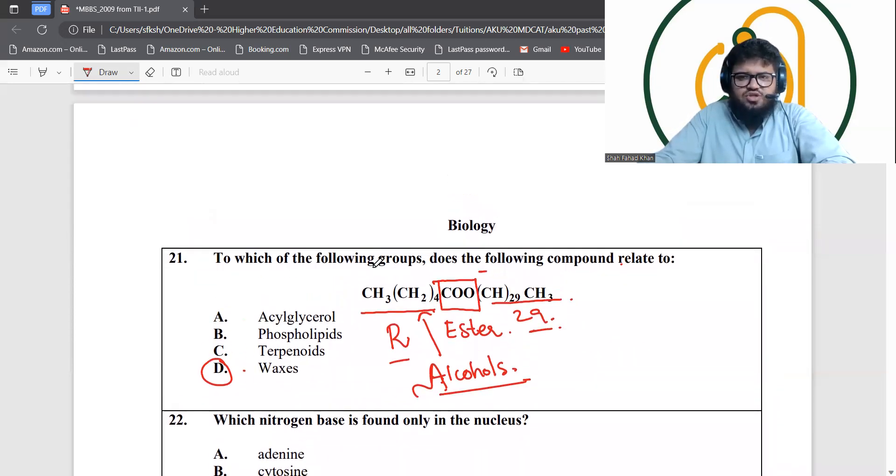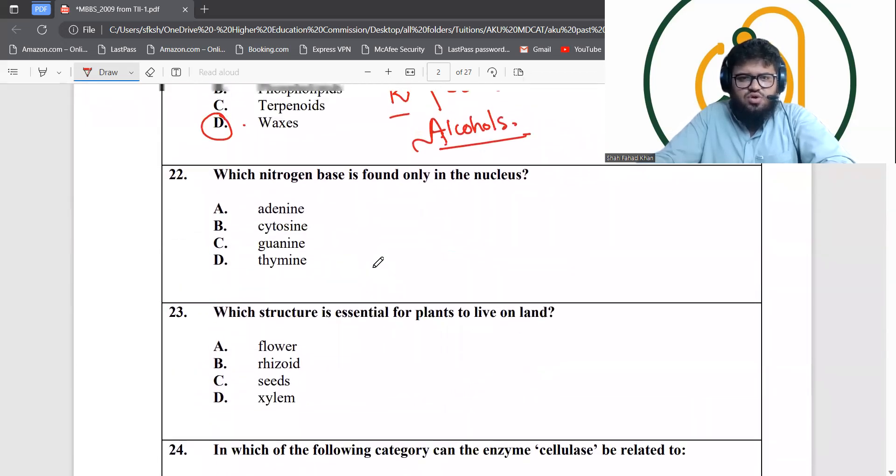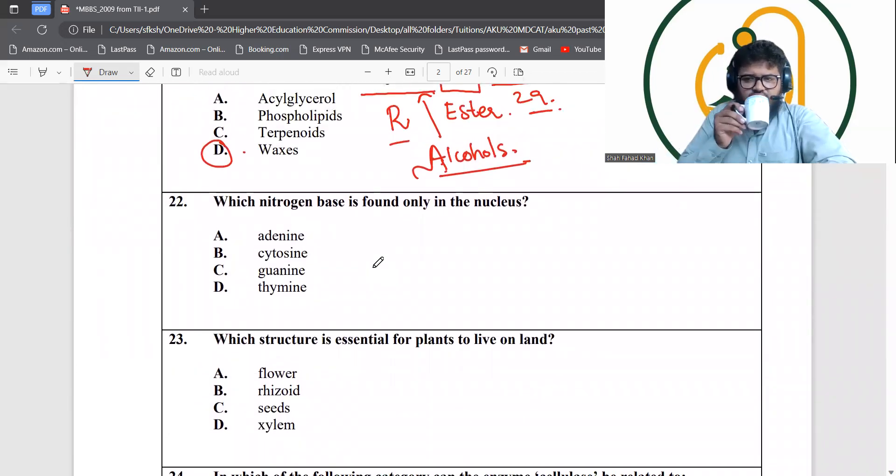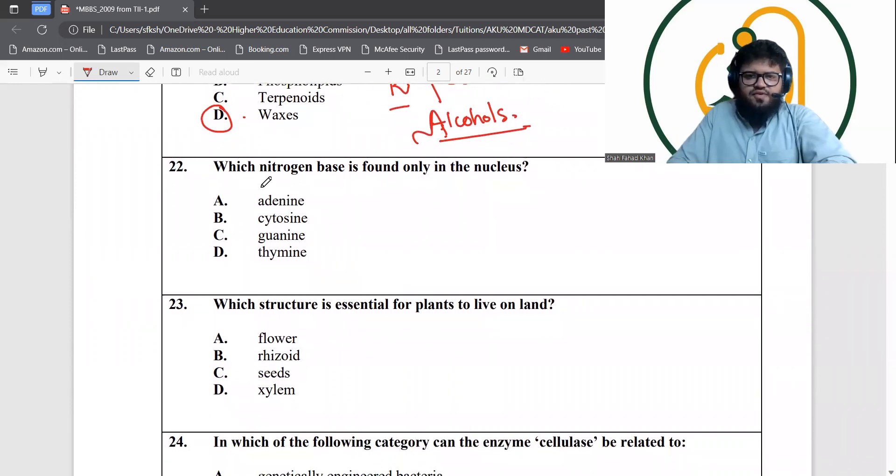Question number two: which nitrogen base is found only in the nucleus? We have four different types of bases: A, T, G, C. Out of them, only thymine is the one found purely in DNA and not in RNA. DNA is present only inside the nucleus, therefore thymine is the answer.